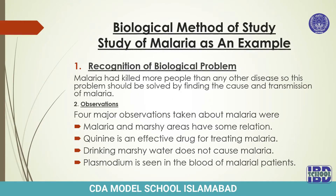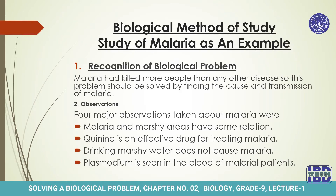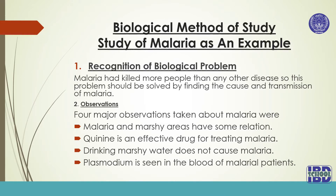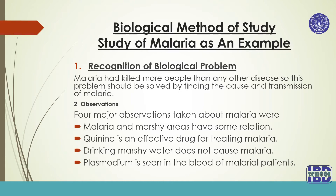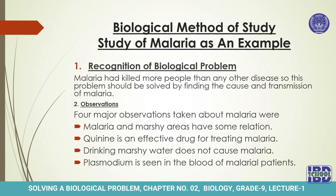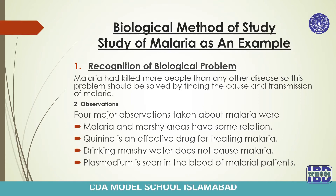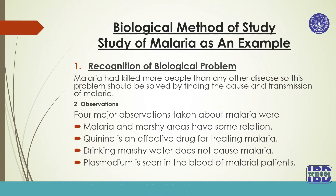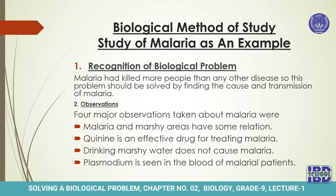Now we will study malaria as an example in which we follow all the steps of the biological method of study. The first step — recognition of biological problem: malaria had killed more people than any other disease, so the problem of finding the cause and transmission of malaria had to be solved. Second, observations: four major observations about malaria were — number one, malaria and marshy areas have some relation; number two, quinine is an effective drug for treating malaria; number three, drinking marshy water does not cause malaria; number four, plasmodium is seen in the blood of malarial patients.